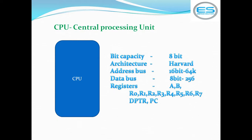Every processor supports a list of registers used to store data temporarily. The 8051 processor supports registers including A, B, R0 to R7, where A and B are SFRs (Special Function Registers) and R0 to R7 are general purpose registers. It also supports 16-bit registers: DPTR (data pointer) and PC (program counter), along with other SFRs. The three important points are bit capacity, architecture, and registers.